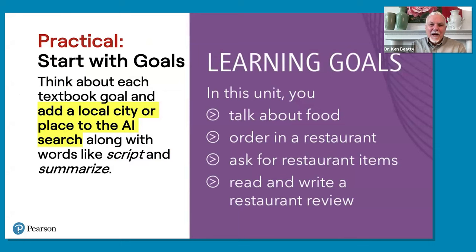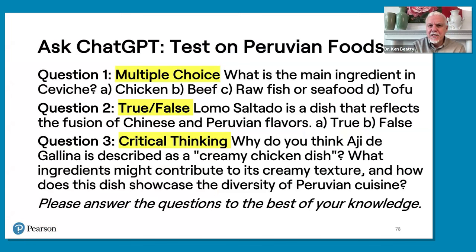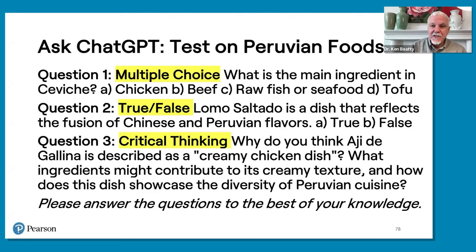For practical implementation, think about each textbook goal and add a local city or place to the AI search. For a unit on food with goals like 'talk about food,' 'order in a restaurant,' and 'ask for restaurant items,' just add your country and students get extra content to learn. Tip 4 is to assess in new ways. Ask ChatGPT to make a test on Peruvian food — it's fantastic. I asked it to make one multiple choice, one true/false, and one critical thinking question. It produced: 'Why do you think Aji de Gallina is described as a creamy chicken dish? What ingredients might contribute to its creamy texture? How does this dish showcase the diversity of Peruvian cuisine?'